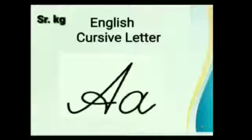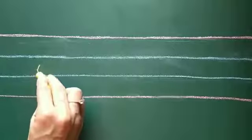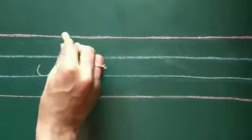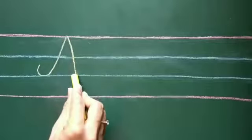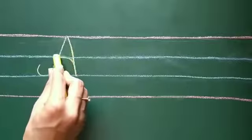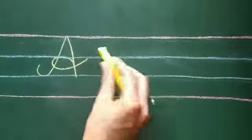Cursive letter A: Making a small curve on the second blue line, go up in a slanting line, touch the red line, come down in a slanting line, go back reverse, make a circle and a tail outwards.